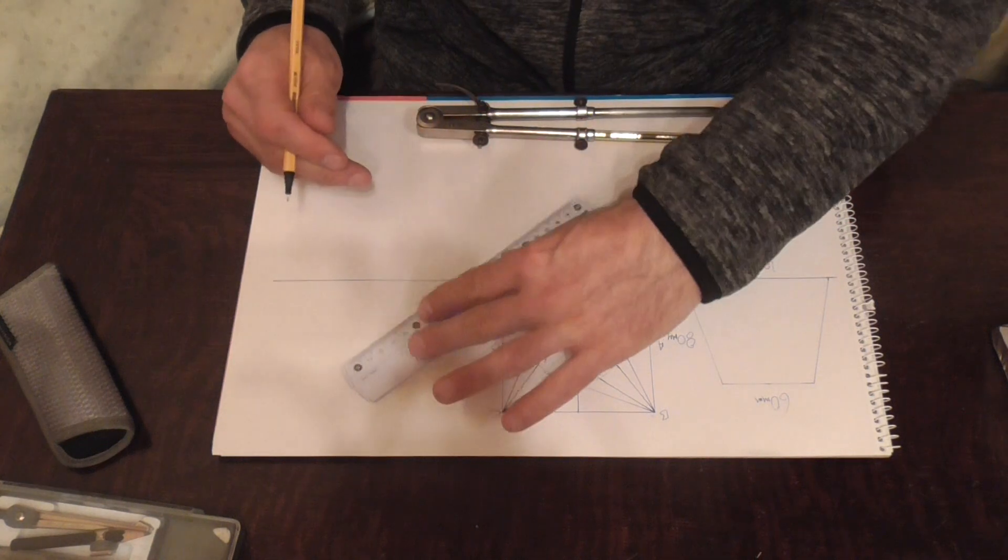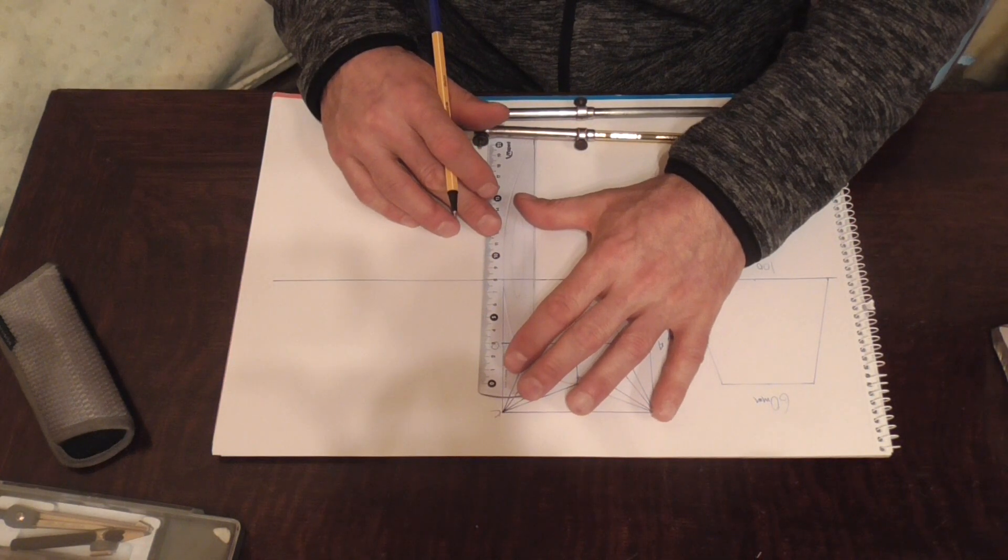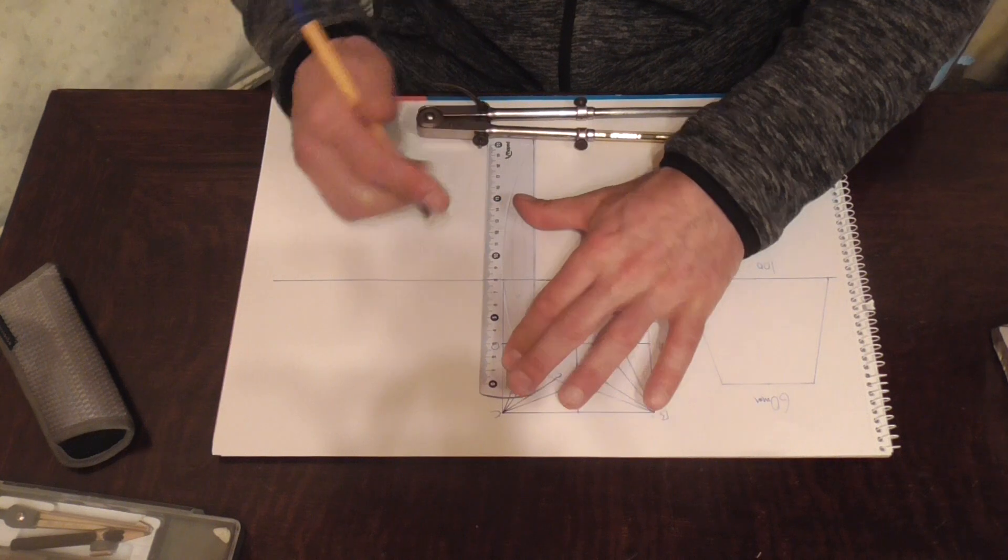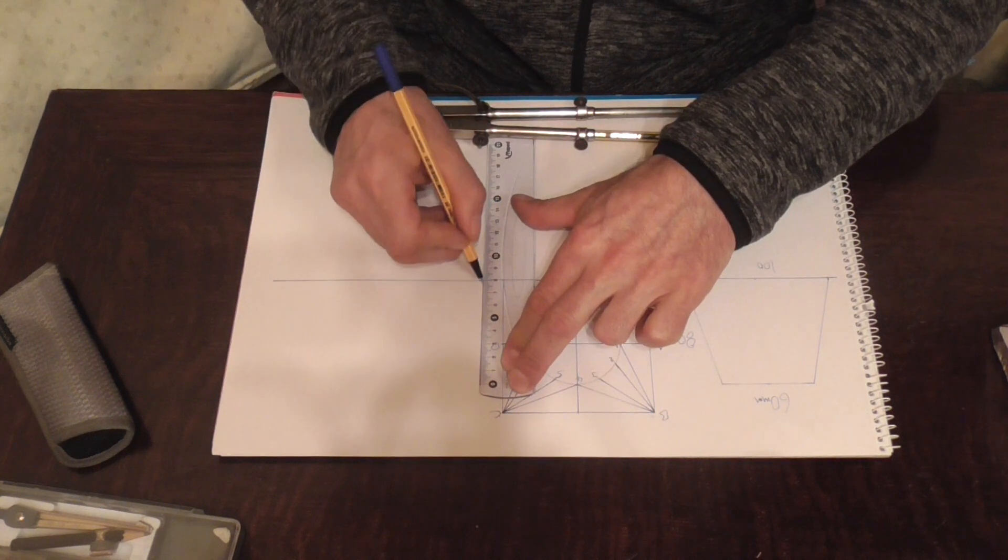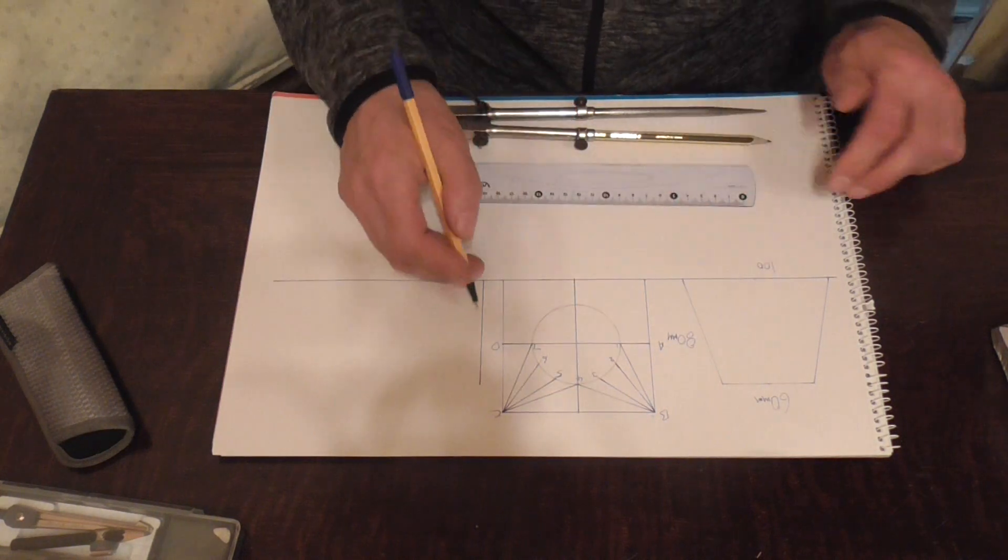Next to that we're going to draw in our true length chart. We know it's 80mm, so we just draw in a line of 80mm. That represents our height. Makes a right angle.